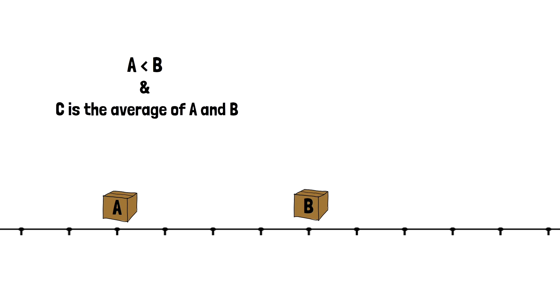Here's the solution. First, let's put all the boxes on a weight line based on the information we know about them. We know that A is less than B, so let's place them this way. And we also know that C is the average of A and B, so it should be in the middle right here.